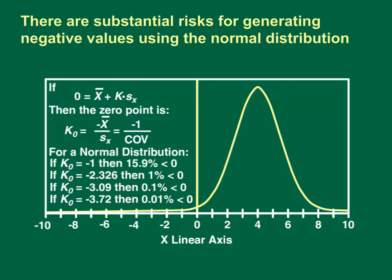This graph shows that the risk for obtaining arithmetic values that are less than or equal to zero can be substantial if the normal distribution is used to simulate data. As the relative variation of data increases, the coefficient of variation increases, the normal frequency factor approaches zero, and the risk for obtaining a negative value approaches 50%. If the COV is equal to one, then K0 would be equal to negative one, and we would expect about 16% of the data to be less than zero. As the COV shrinks to about 0.27, the K0 value decreases to minus 3.72, and the probability that a negative value would be generated shrinks to about 0.01%, or about 1 in 10,000.